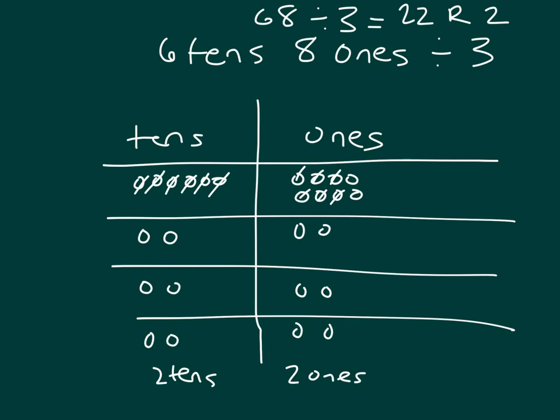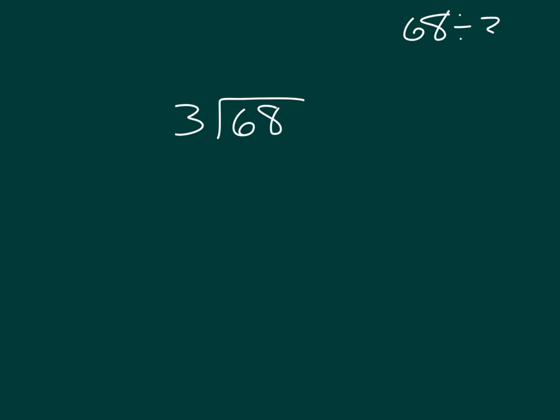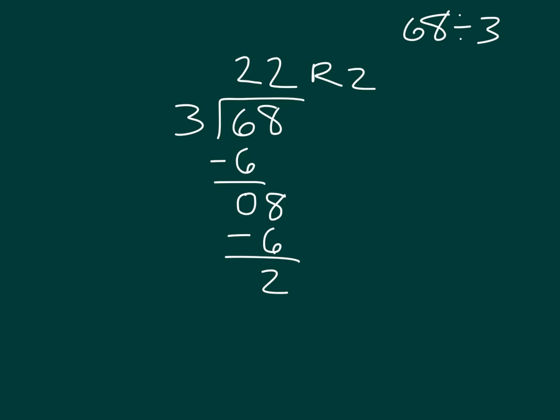Let's look at the long division for this problem. We are taking sixty-eight and dividing by three. The dividend goes inside, and our divisor — what we're dividing by — goes outside. We start in the tens place: six tens divided by three equals two tens, so we place the two there. Two times three is six; six minus six is zero. Bring down the eight ones and divide: eight ones divided by three is two, because two times three is six, and eight minus six is two. Our remainder is two. Sixty-eight divided by three equals twenty-two with a remainder of two.